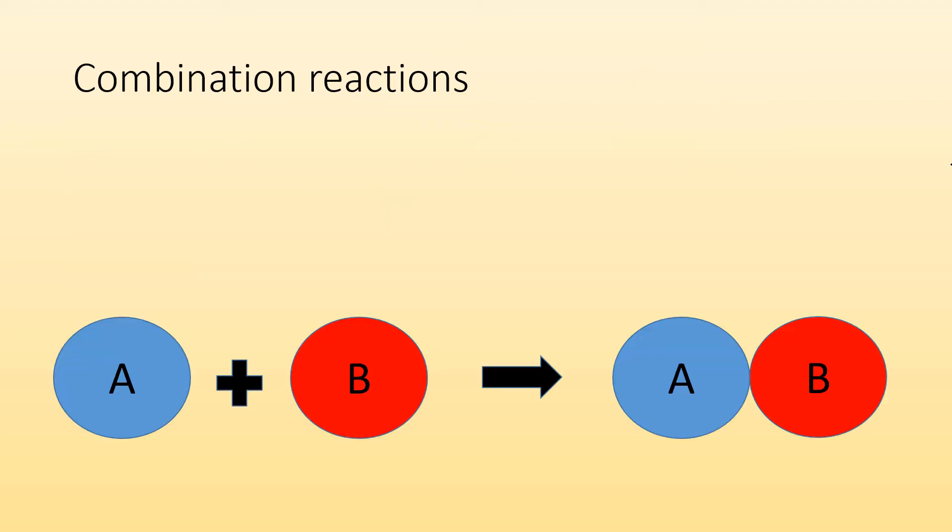If we start with combination reactions, the generic formula is A plus B gives me a compound where those two things are combined, A and B. So two or more substances are going to react to create a single substance.